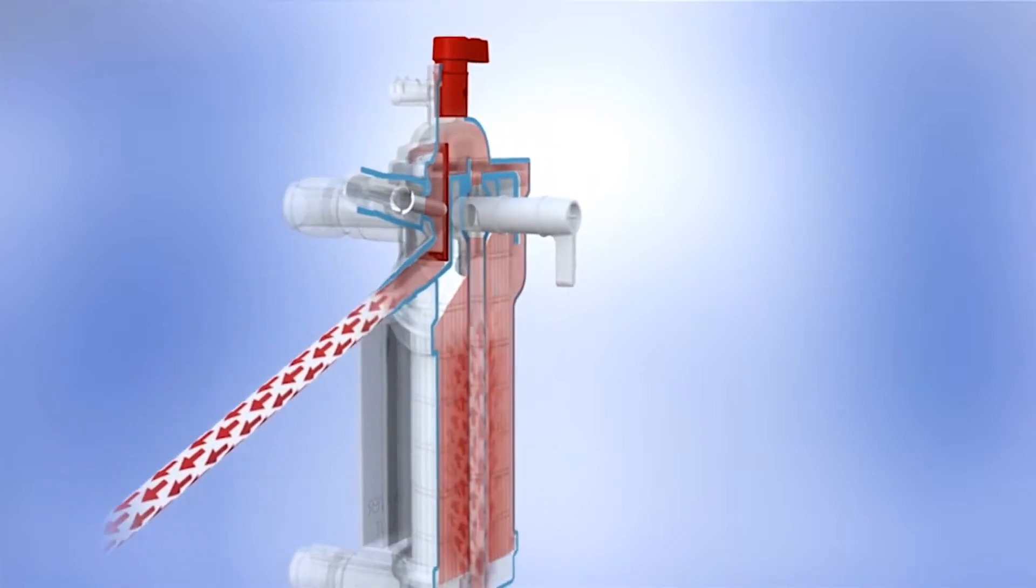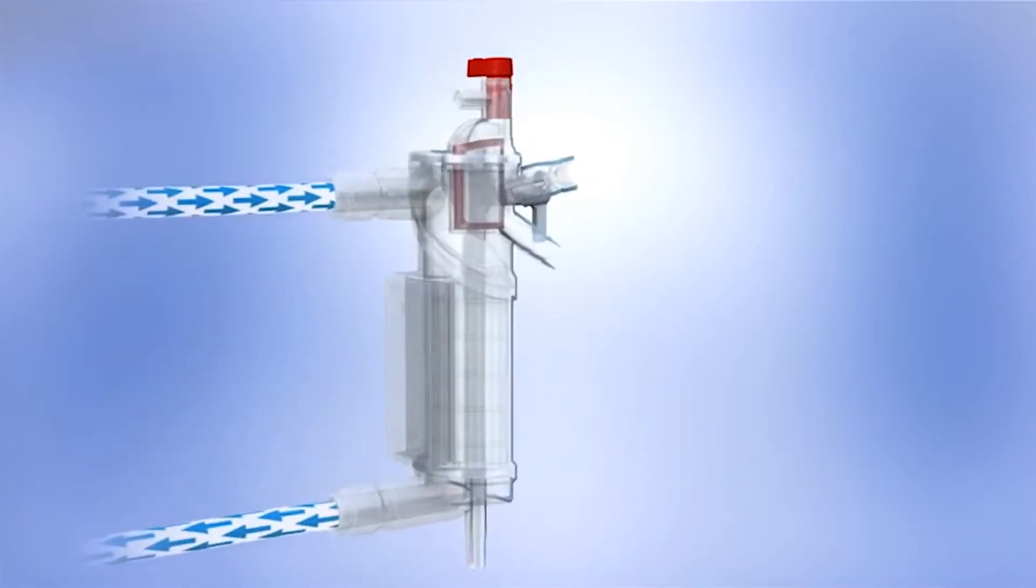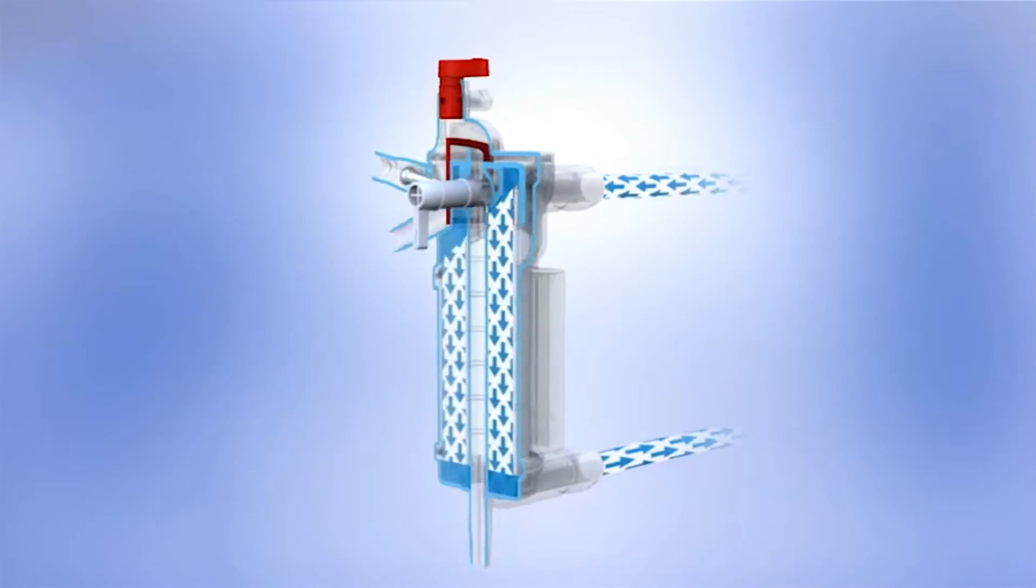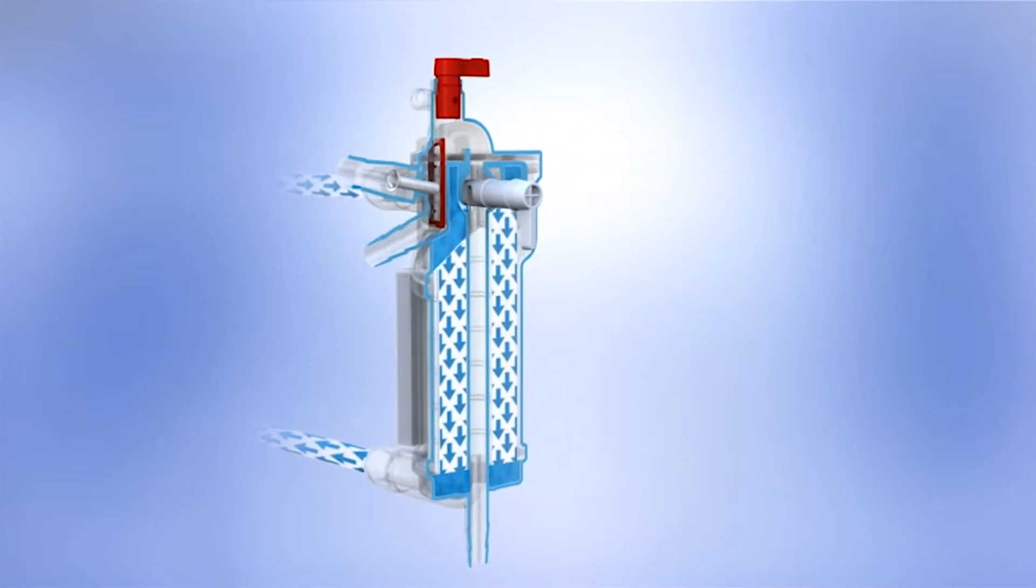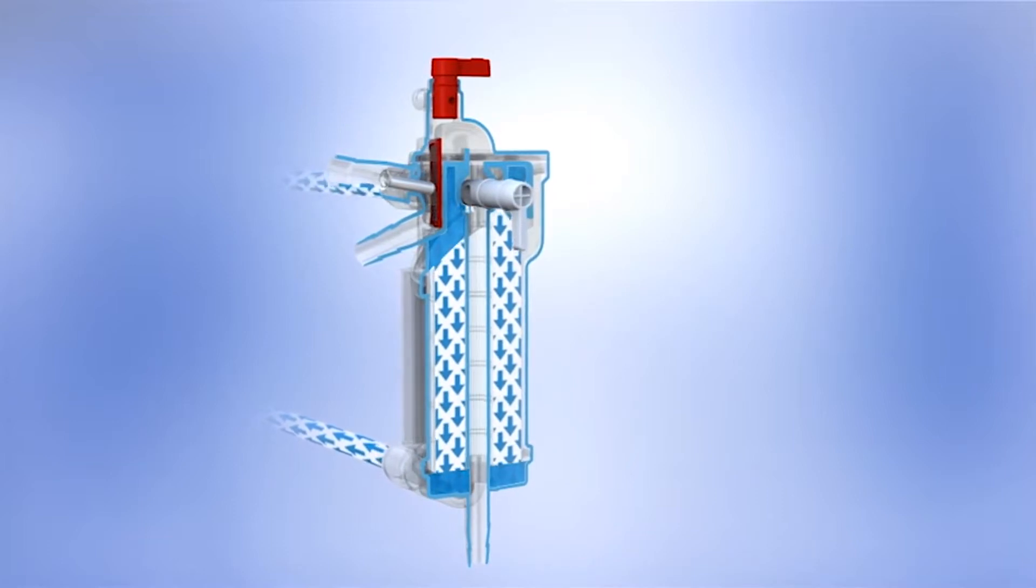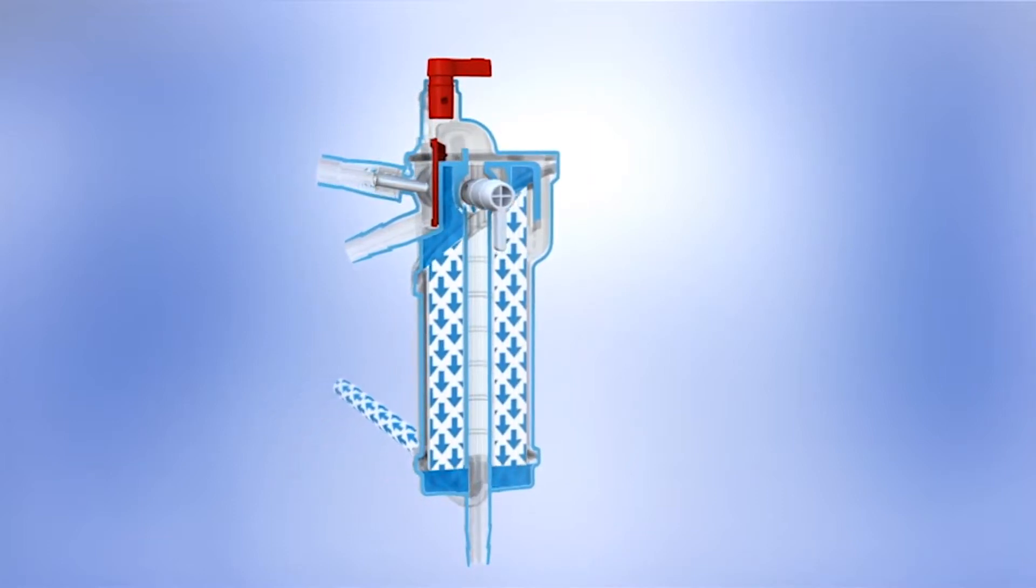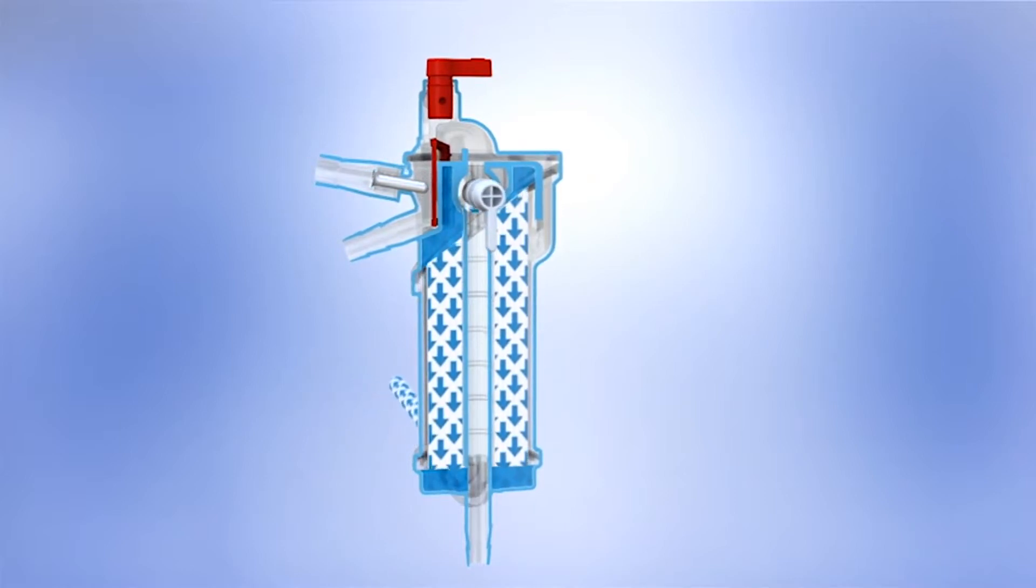For optimum heat exchange efficiency, water flows in the opposite direction to the blood flow. Water flow is therefore from top to bottom inside the heat exchanger fibres. The biocompatible heat exchanger fibres are polyurethane and are also used in our Quadrox oxygenators.